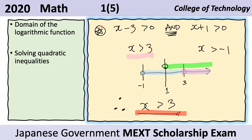Now we look at the star case, where x minus three and x plus one are both positive. x minus three greater than zero becomes x greater than three, and x plus one greater than zero becomes x greater than negative one. On the number line, the pink region is to the right of three and the blue region is to the right of negative one.